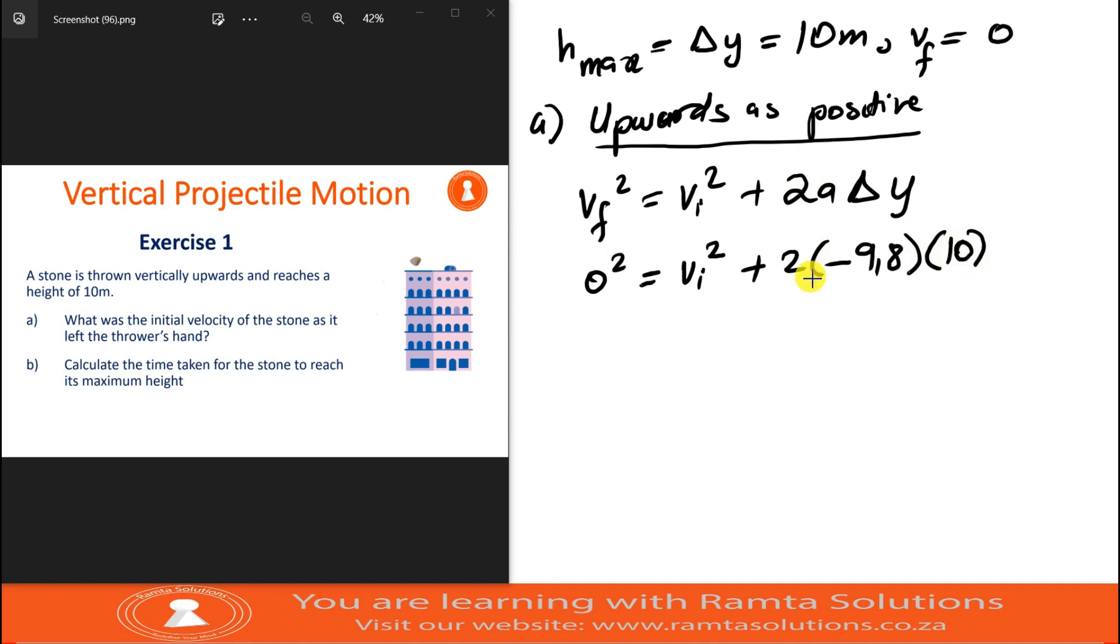Now let's see, we have zero equals vi squared minus, this is 2 times 9.8 times 10, which is minus 196. So vi squared equals 196. Therefore vi is square root of 196.